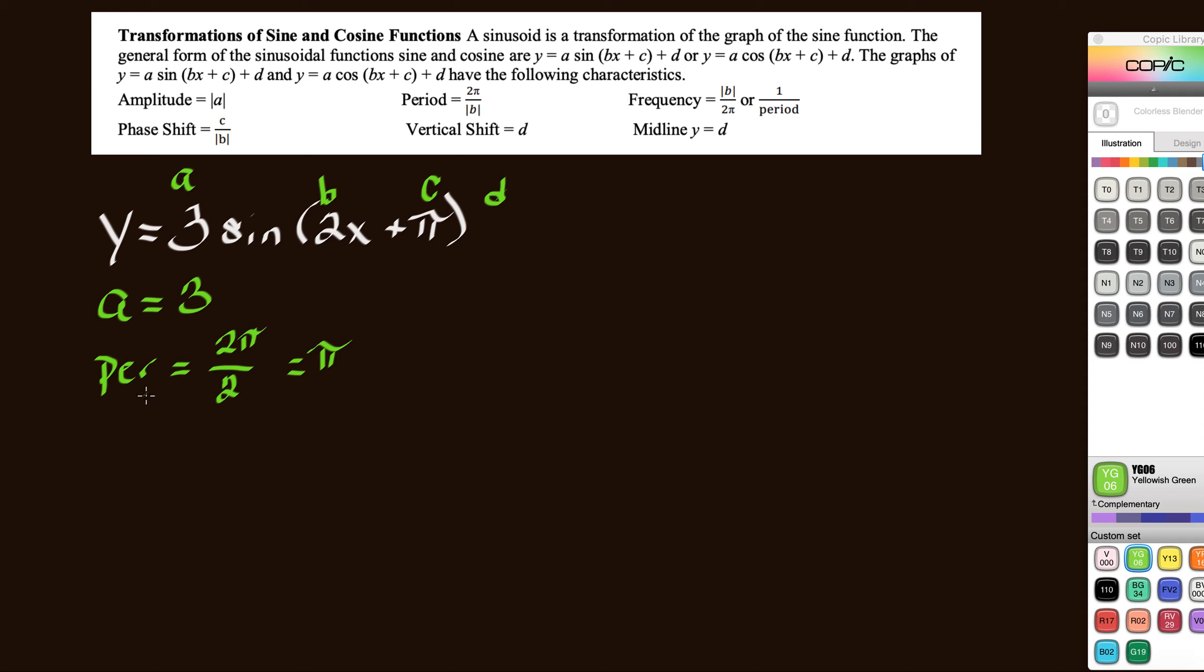So our period is equal to pi. If we want to know what our frequency is, our frequency is 1 over our period.